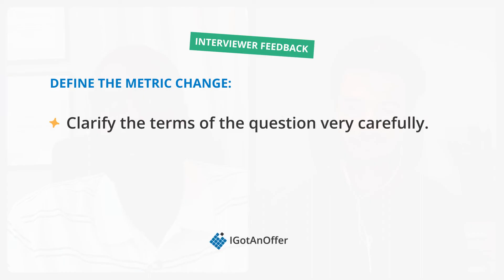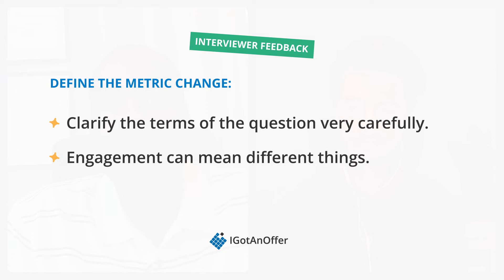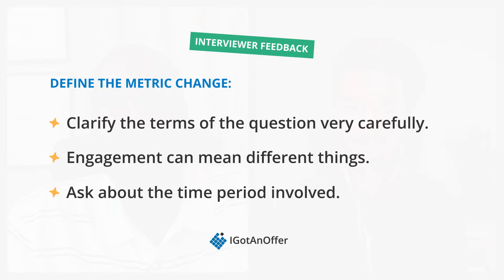In any metric change question, it's very important to start off by carefully clarifying the terms of the problem. Here, engagement can mean different things in different products and contexts, so it's crucial to understand exactly what type of engagement we're looking at. If the interviewer is thinking about time spent and you're thinking about likes, you'll get into trouble. Damian does this very well, asking the right questions to get a more accurate picture of the problem. He should probably also have asked about the time period — did the drop happen over one day or one week, for example?